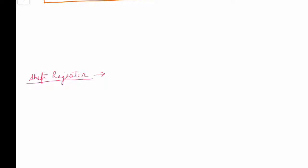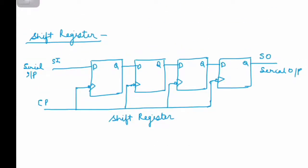We will see an example of the simplest form of shift register. Here we have a clock pulse — the bubble in the clock pulse represents that the flip-flop is negative edge triggered. On the leftmost side there is a serial input, and all flip-flops are connected in a cascade way, with a serial output on the right.